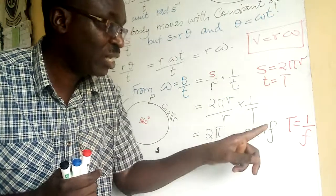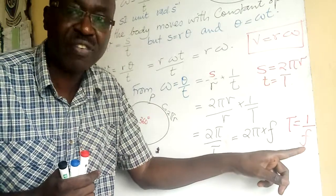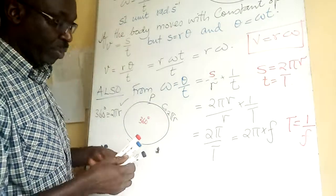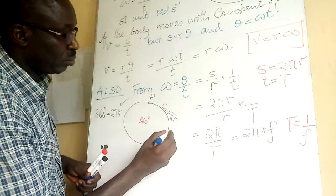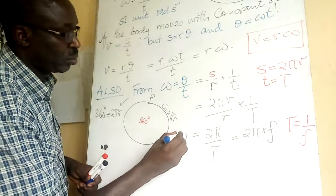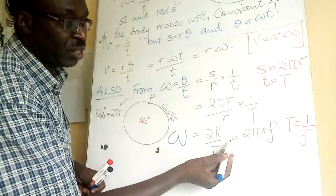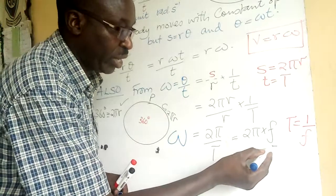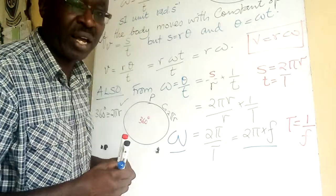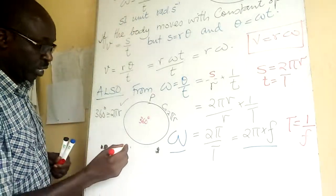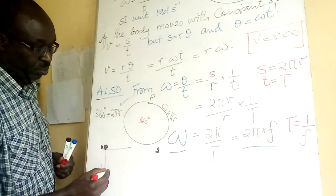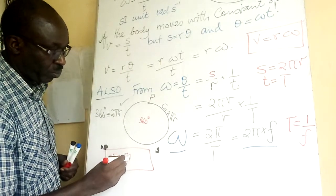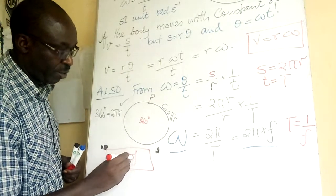Since capital T equals 1 over frequency F, substituting gives us omega equals 2π times F. So angular velocity omega equals 2πF.